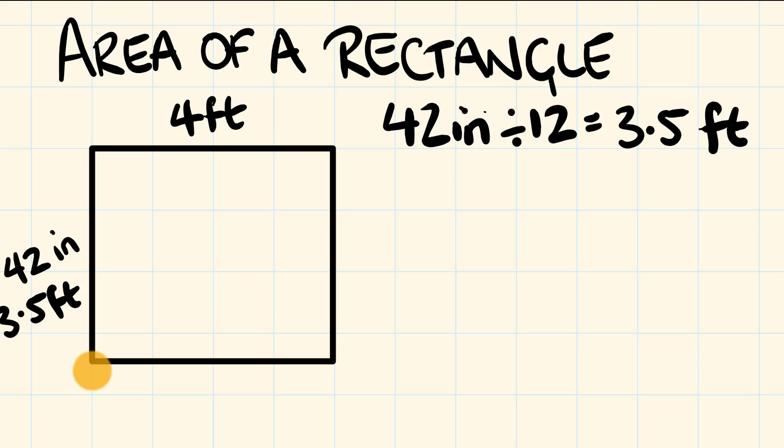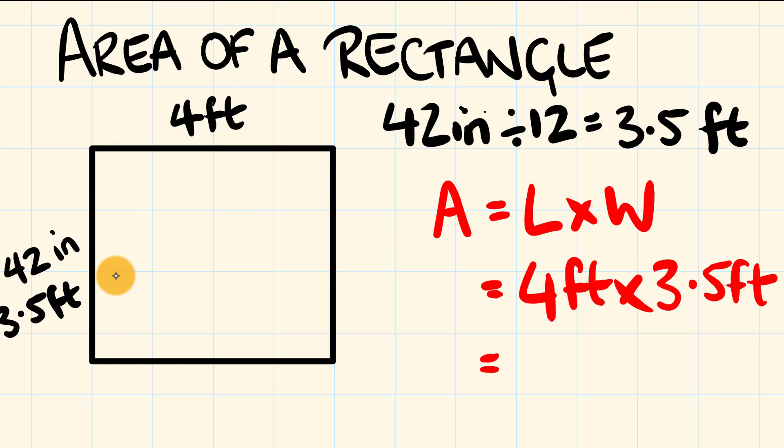So now we can work out the area of this rectangle in square feet. So the area is equal to the length by the width. So what does this equal? The length is four feet and the width is three and a half feet. Go through and multiply these. We get four foot times three and a half foot is 14 feet squared. And we can draw this in.